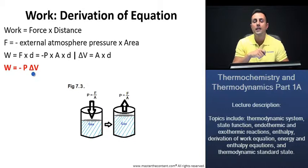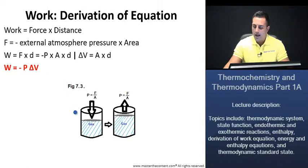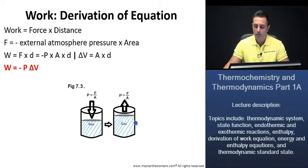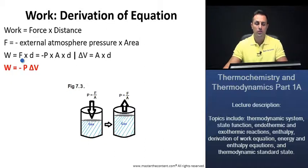Now, intuitively, it should also make sense that work is going to be negative and energy is going to be negative. If we take a look at figure 7.3 once again, the system does work to move the air molecules here — it makes sense then that the system is going to be losing energy. Thus, our work and our energy is going to be negative. Let's take this equation and build on it on the next slide, and concentrate more on the energy equations.